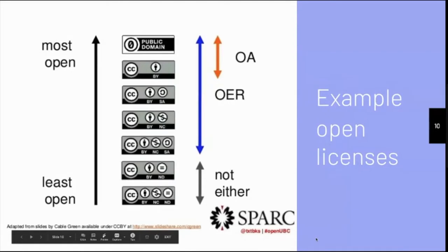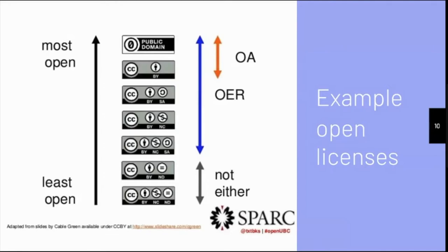Here we can see that Cable Green from the Creative Commons organization, as well as Spark, has created a graphic showing the spectrum from the least open to the most open. Things in the public domain or those that are CC BY are the most open types of resource. Sometimes there are good reasons to apply a more restrictive license — for example, CC BY-ND, where you don't want changes or remixes to occur. These icons help you understand how a material can be used or reused, and if you're creating your own materials, you can define the terms under which your open items can be used and redistributed.